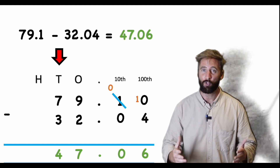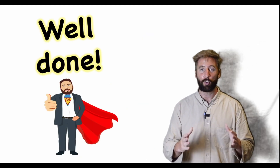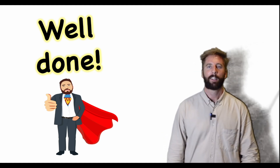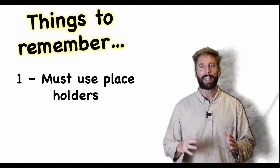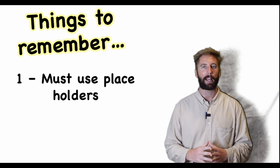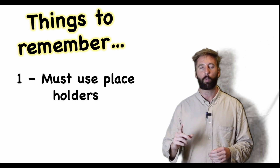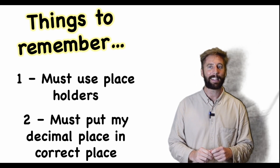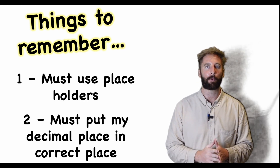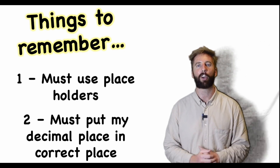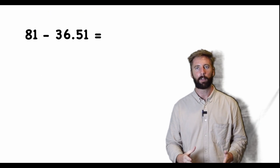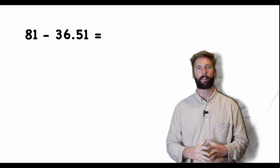That was really challenging — if you can do that correctly you are advanced Year Five students. Two things to remember: first and most important, if we have any gaps we must fill them with placeholders, otherwise we get a totally different answer. Second, we must put the decimal point into our answer. Now let's have a look at another hard Stage Three question: 81 subtract 36.51.